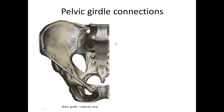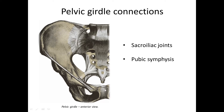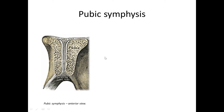In the pelvic girdle we distinguish the following connections: sacroiliac joints, a connection between the sacrum and hip bone; then pubic symphysis, a connection of pubic bones from the anterior side; and various pelvic ligaments, which we will discuss later.